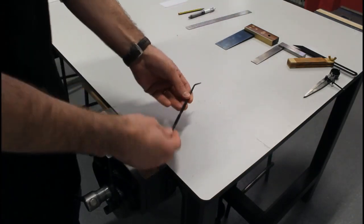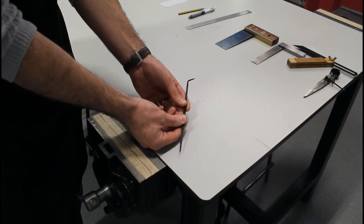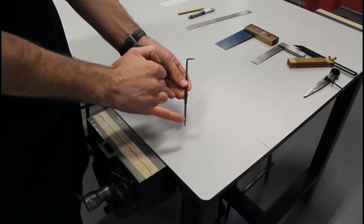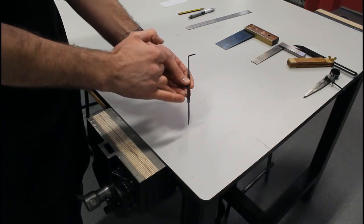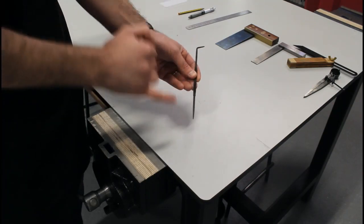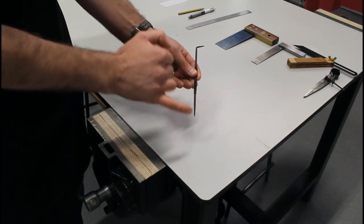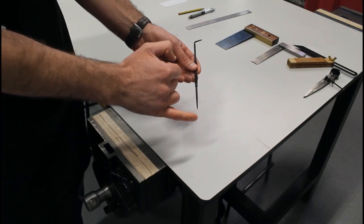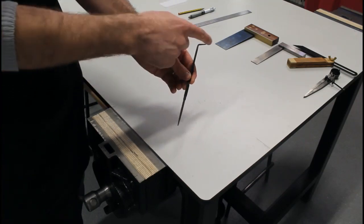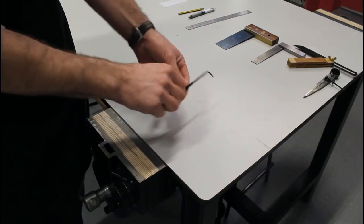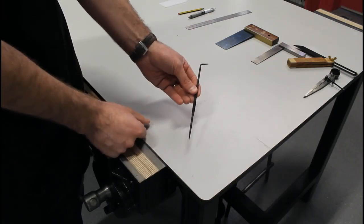Our next marking out tool is known as an engineer's scribe. What this does is used on acrylic, plastics or metals and it literally scratches the material to mark lines on it. So we have points on either side. This is at 90 degrees to get into awkward positions. So that's known as an engineer's scribe.